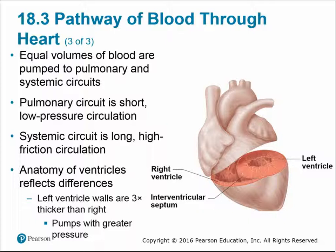Equal volumes of blood are generally pumped to both pulmonary and systemic circuits, though they differ significantly. The pulmonary circuit is a short, low-pressure circulation — only from the heart to the lungs and back. The systemic circuit is a long-distance, high-pressure circulation that must get blood all the way to the tips of the toes and back. The anatomy of the ventricles reflects these differences: the left ventricle for the systemic circuit is three times as thick as the right ventricular wall, allowing it to pump with greater pressure and force.